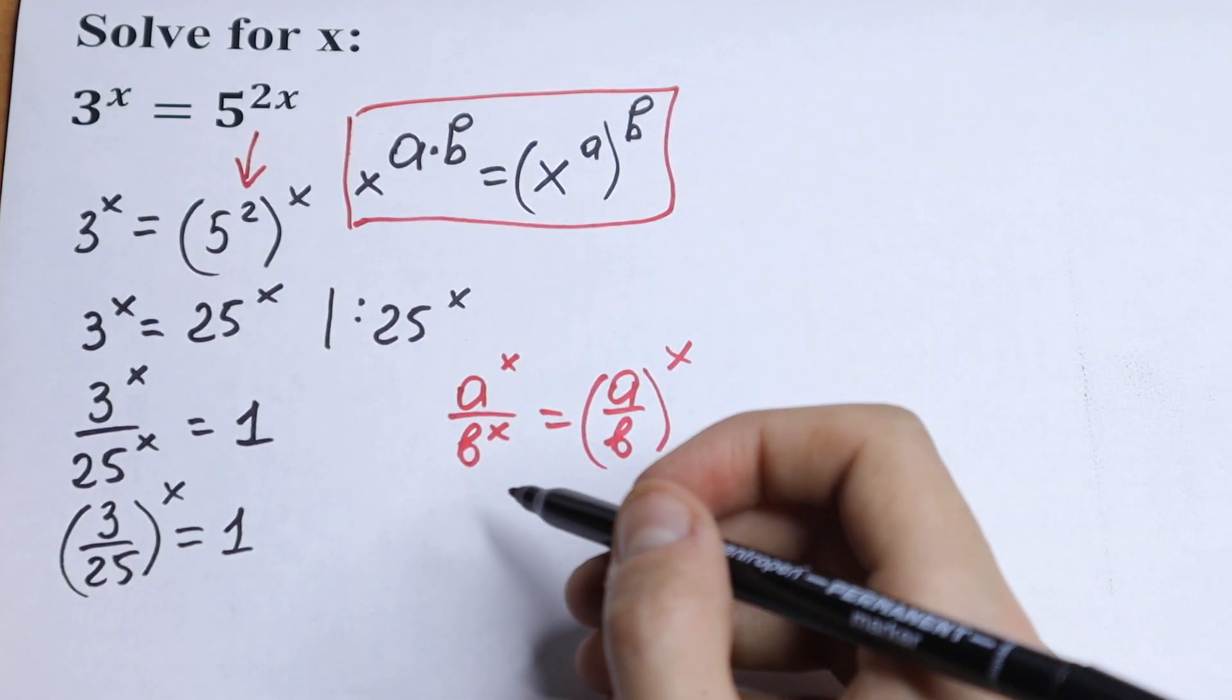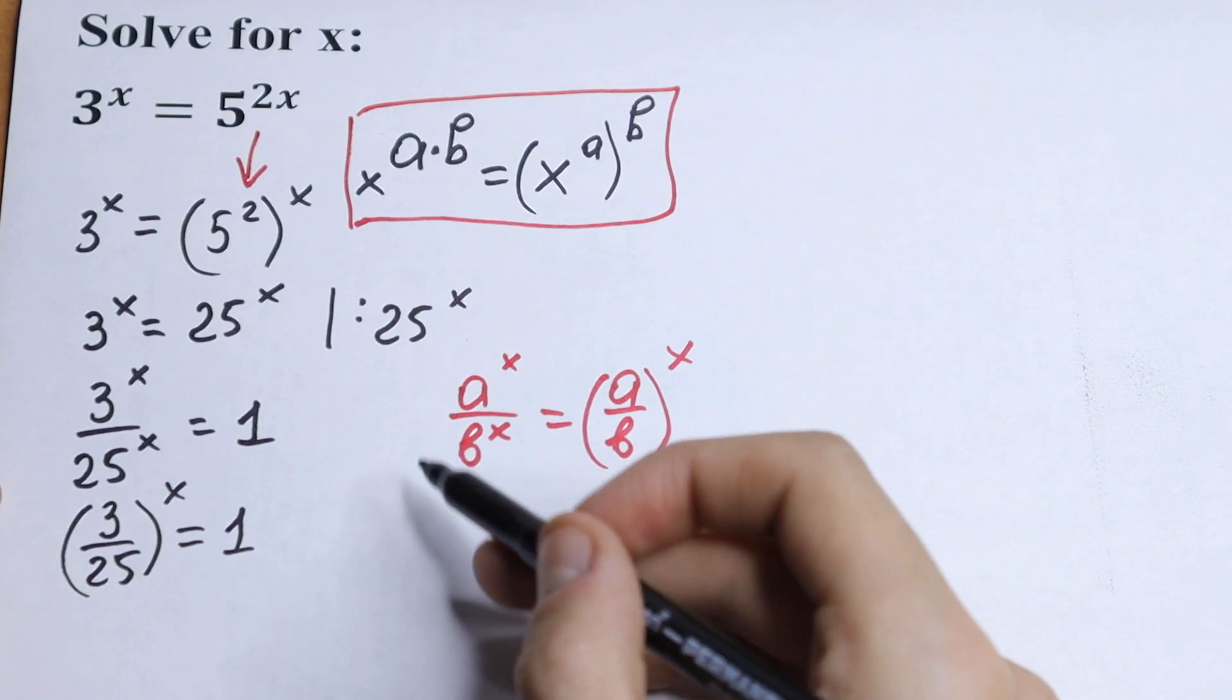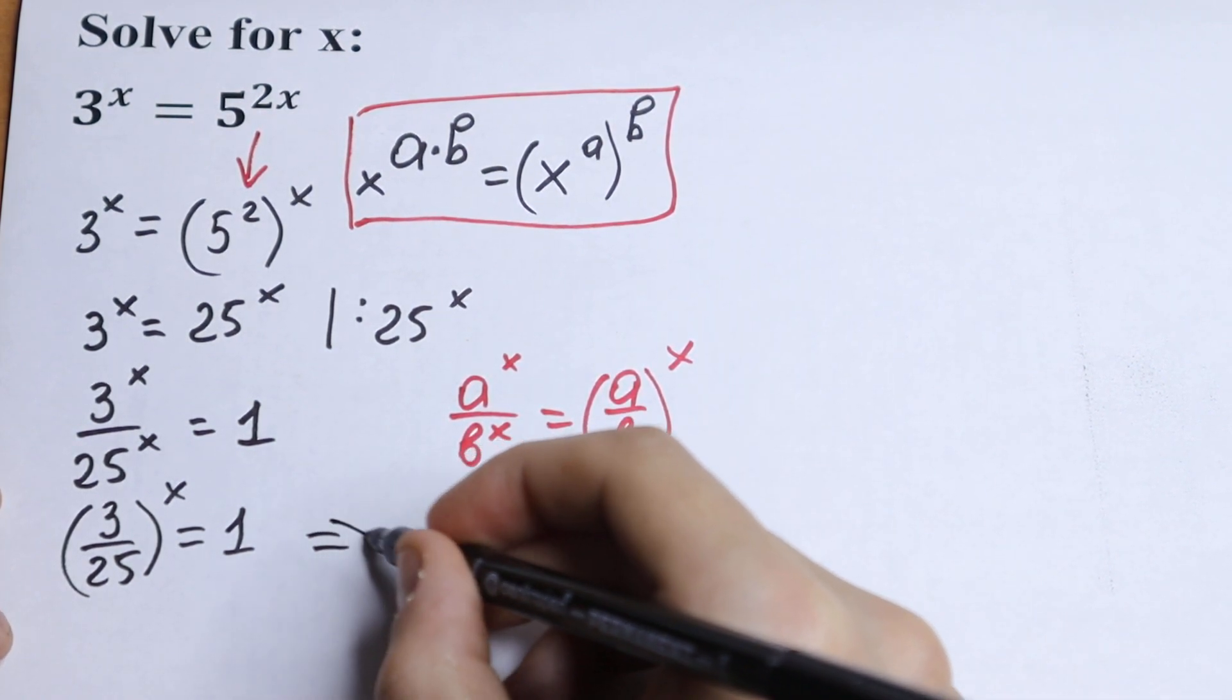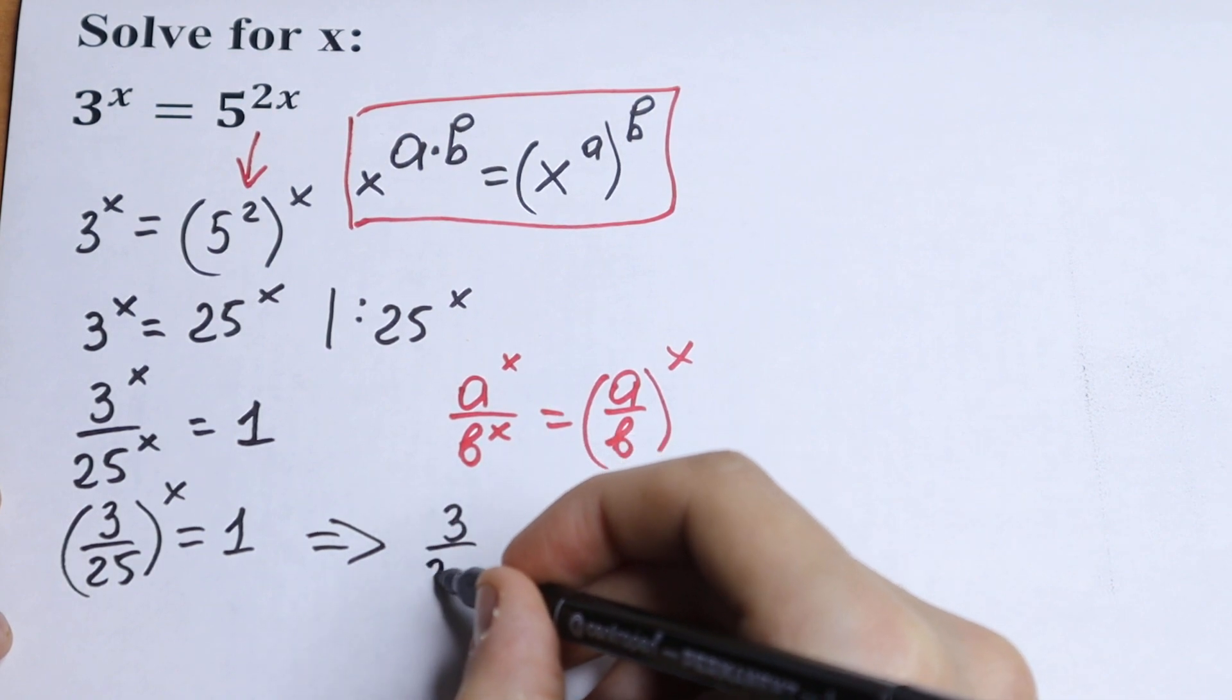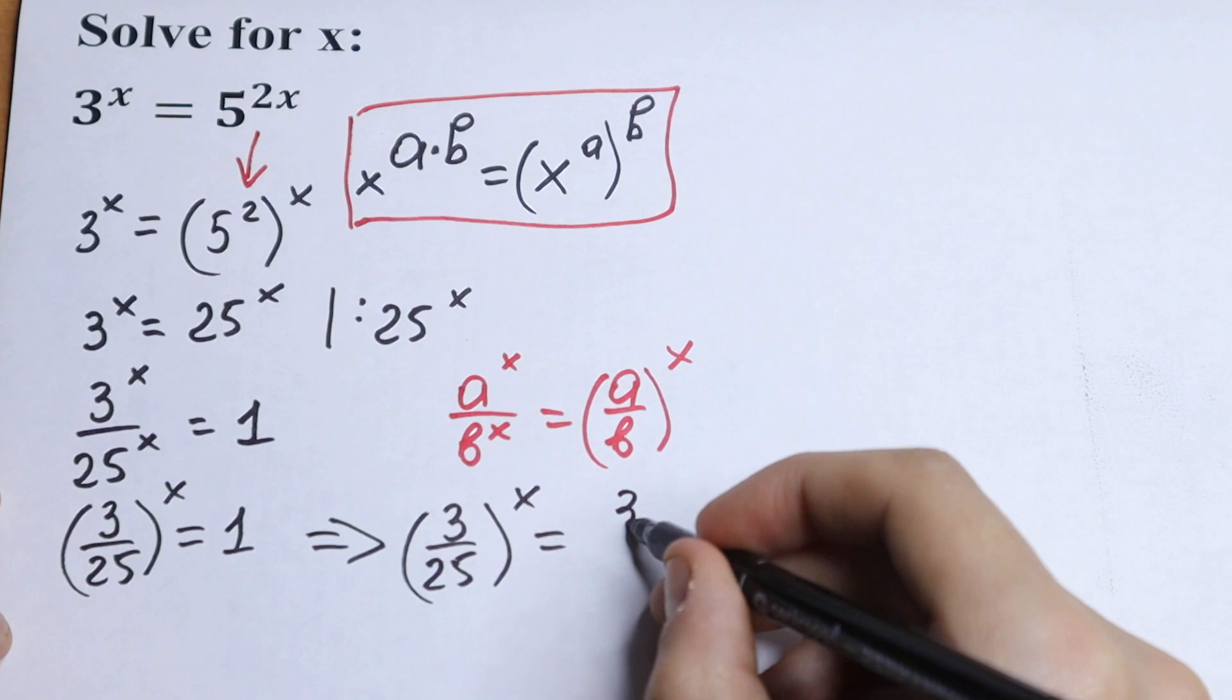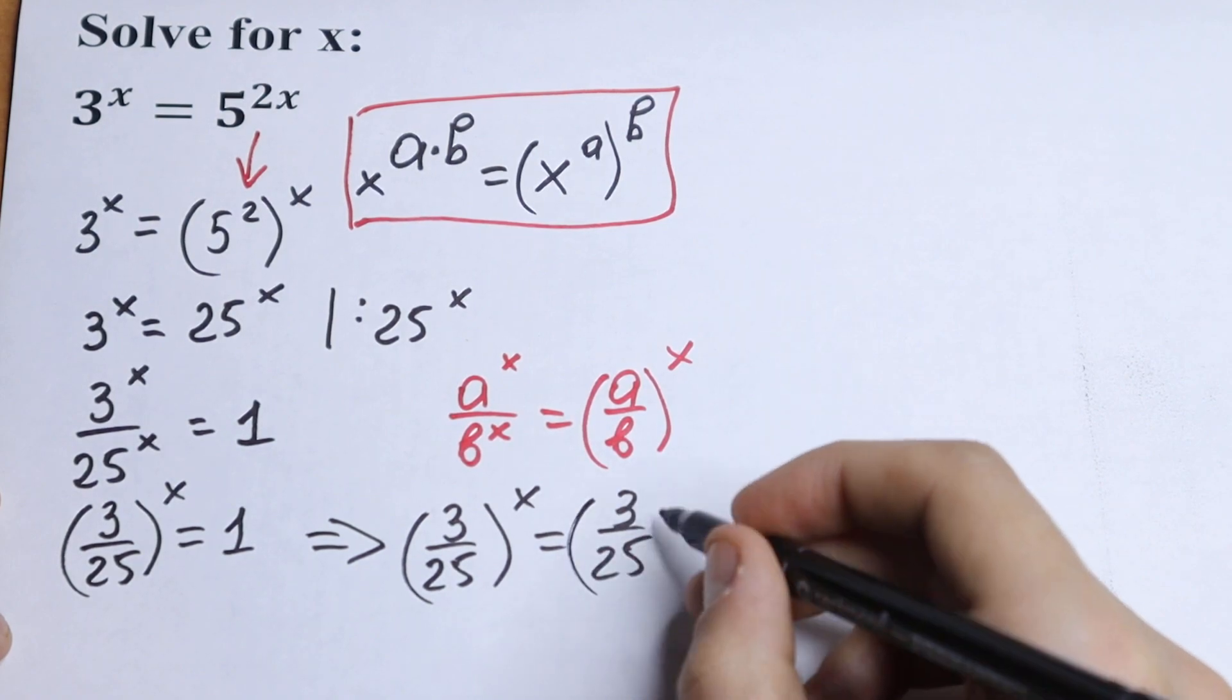So it doesn't matter what the base is, if we raise this base to the power 0, we will have 1. So we can write this as 3 over 25 raised to the power x equals 3 over 25 to the power 0.